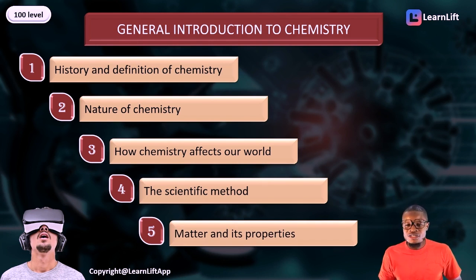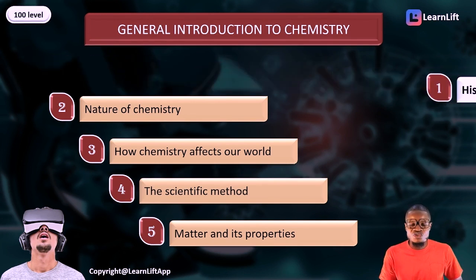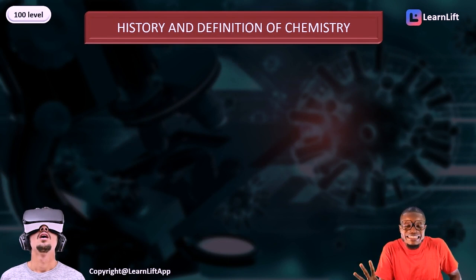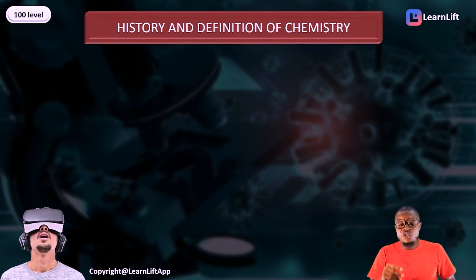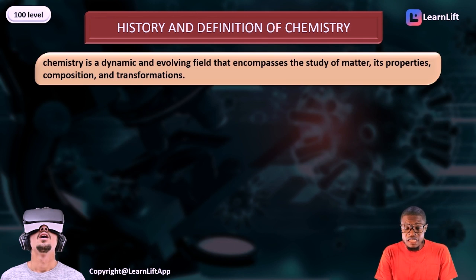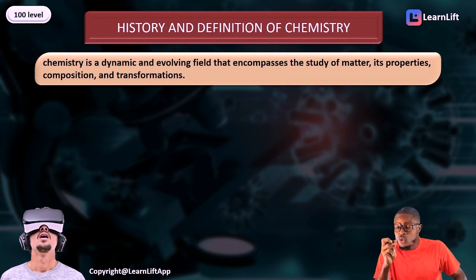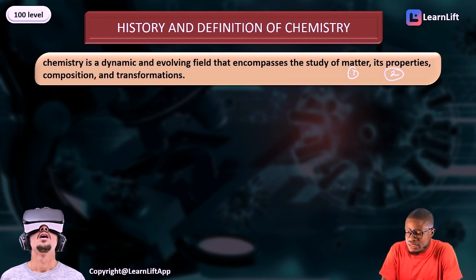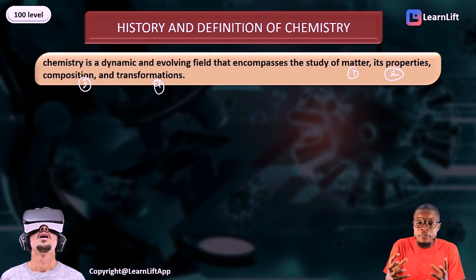Let's begin with the history and definition of chemistry. Chemistry is a dynamic and evolving field — it is not static or fixed. Chemistry is dynamic, things are changing every day, and it encompasses the study of matter. The key areas are: matter, its properties, its composition, and its transformation.